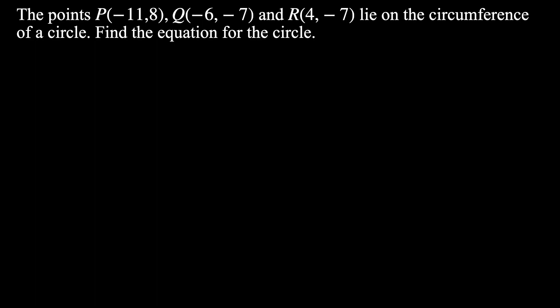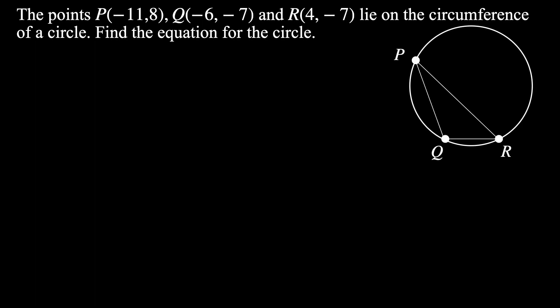Let's look at an example. The points P(−11, 8), Q(−6, −7) and R(4, −7) lie on the circumference of a circle. Find the equation of the circle. If you were to draw a diagram it might look something like this — we have our circle and the points P, Q and R, and we can create a triangle by connecting those points. To find the equation we need the center and the radius. We need to find the perpendicular bisectors of two of these lines. I'm going to use PQ and QR, but you could also use PR.